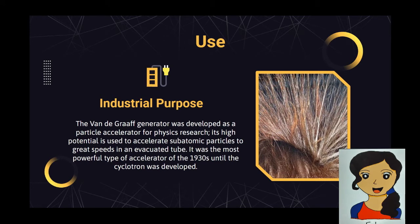Industrial purpose: The Van de Graaff generator was developed as a particle accelerator for physics research. Its high potential is used to accelerate subatomic particles to great speeds in an evacuated tube. It was the most powerful type of accelerator of the 1930s, until the cyclotron was developed.